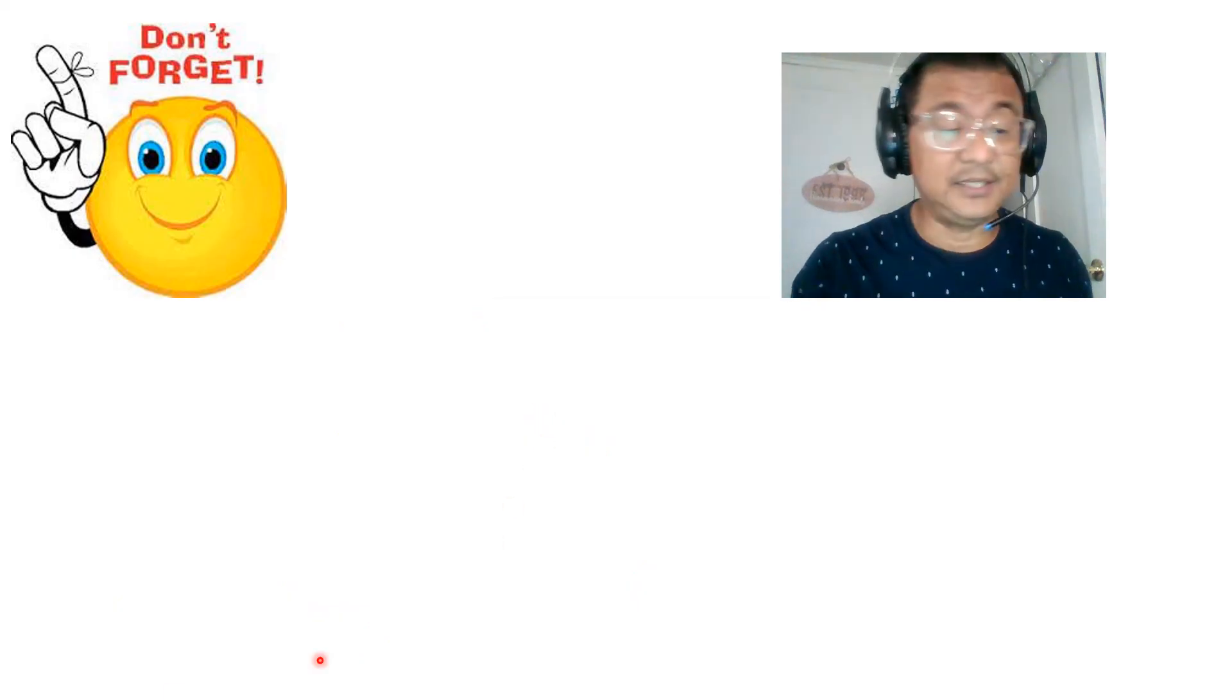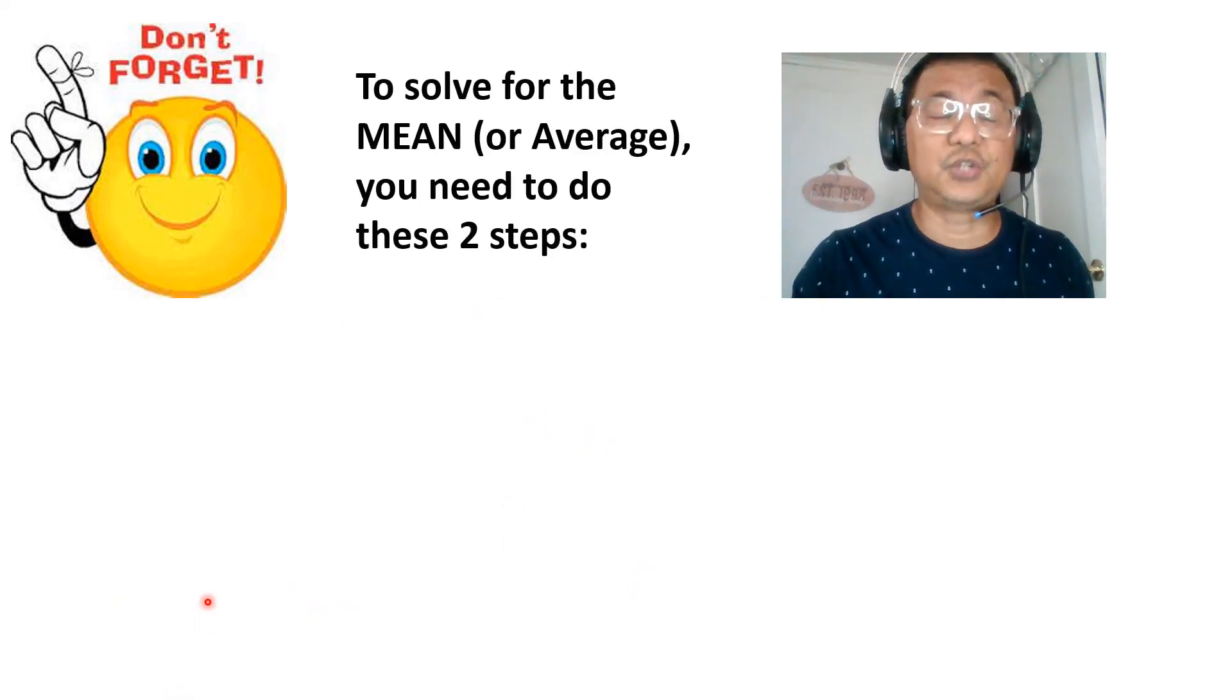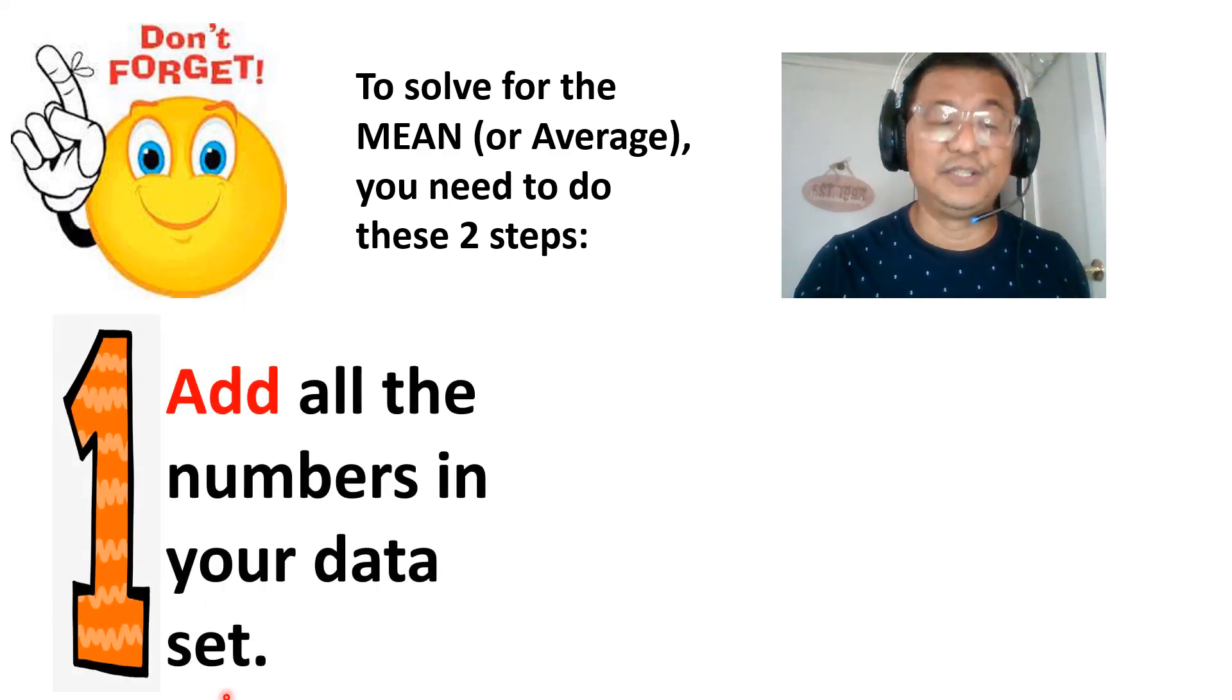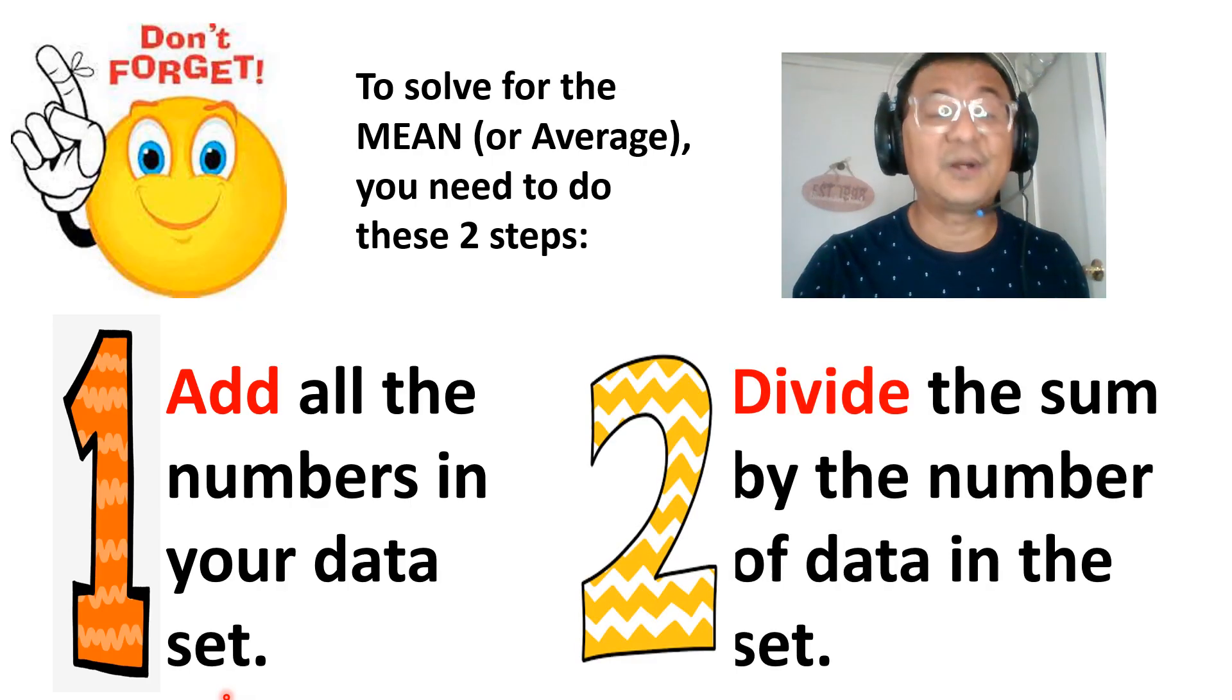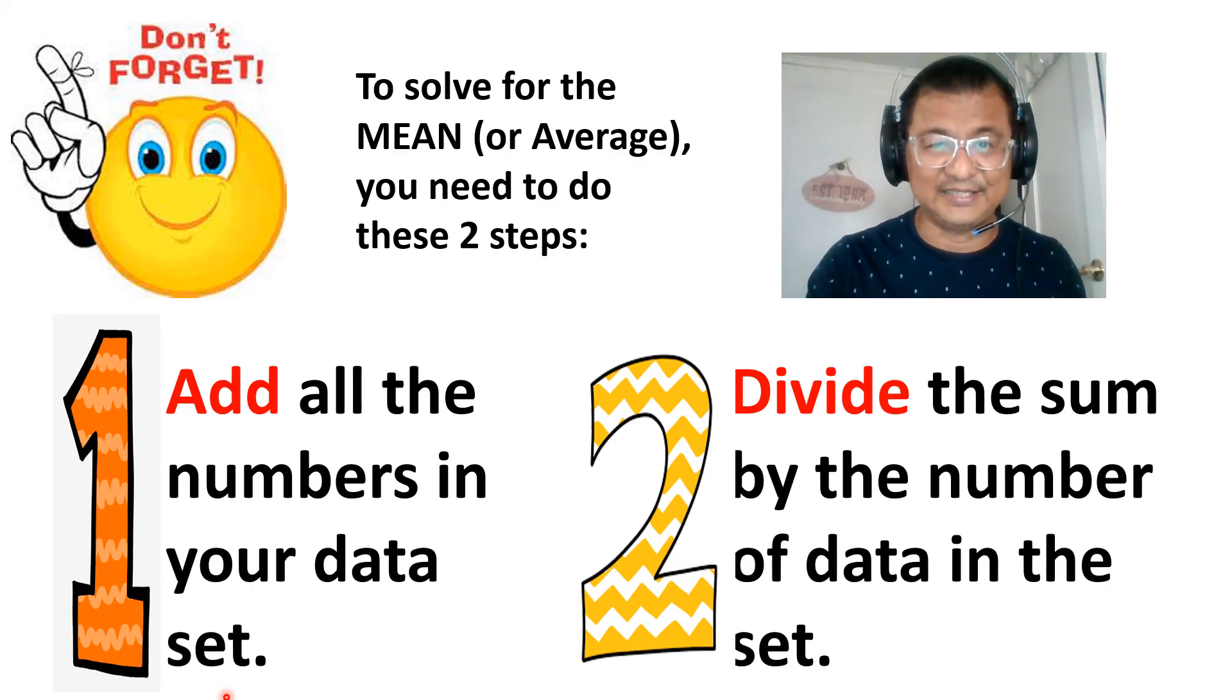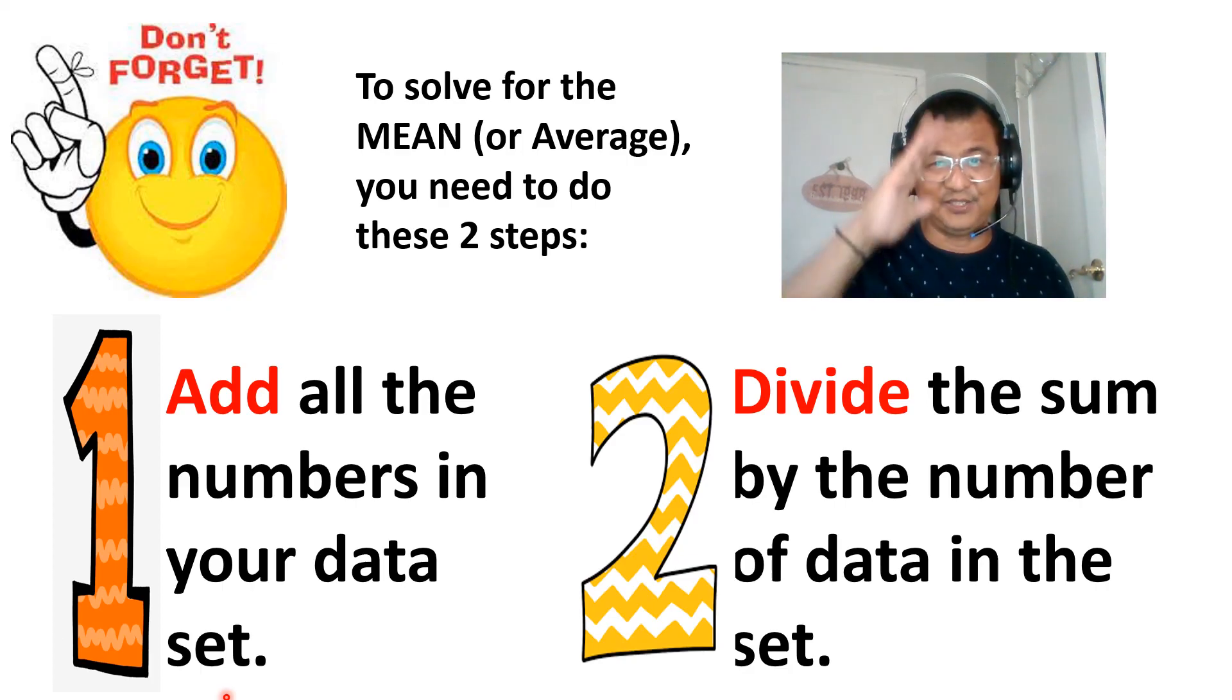So don't forget, let's summarize what we've learned. To solve for the mean or the average, you need to do these two steps. Step 1: add all the numbers in your data set. And step 2: divide the sum by the number of data in the data set. Thank you for listening. See you next time.